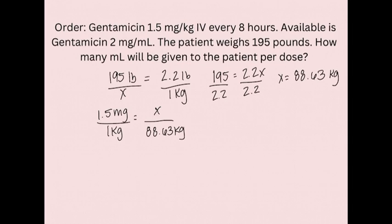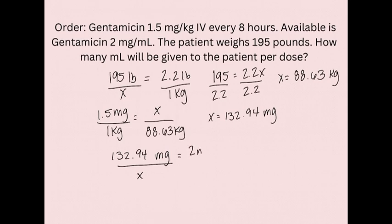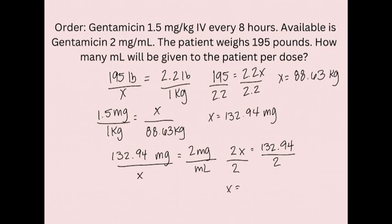Cross multiplying gives X equals 132.94 milligrams. Now use the drug concentration to find the volume: set up 132.94 milligrams over X mLs equals 2 milligrams per 1 mL. Cross multiply and divide by 2 to isolate X, and we get 66.47, which you can round to 66.5 mLs to give IV every 8 hours.